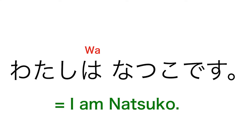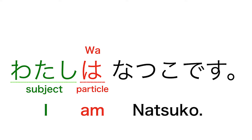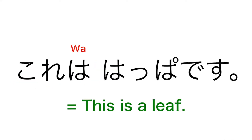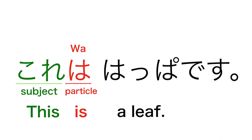For example, 'watashi wa Natsuko desu' means 'I am Natsuko.' The particle wa comes after the subject. Here, 'watashi' means 'I,' so 'watashi wa' means 'I am.' Another example: 'kore wa happa desu' means 'this is a leaf.'